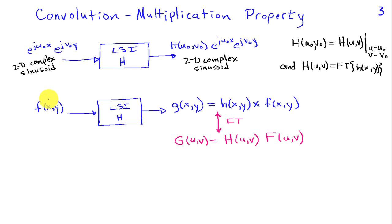We would say that 2D sinusoids of this form are eigenfunctions of linear shift invariant systems. Well, extending this idea more generally to an input f of x comma y that can be expressed using the Fourier transform as a weighted sum of 2D complex sinusoids.